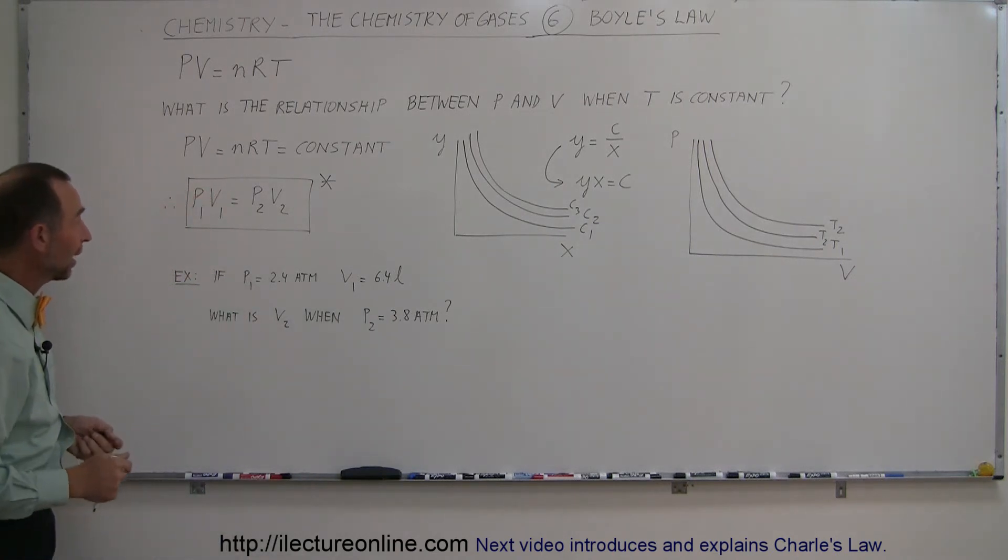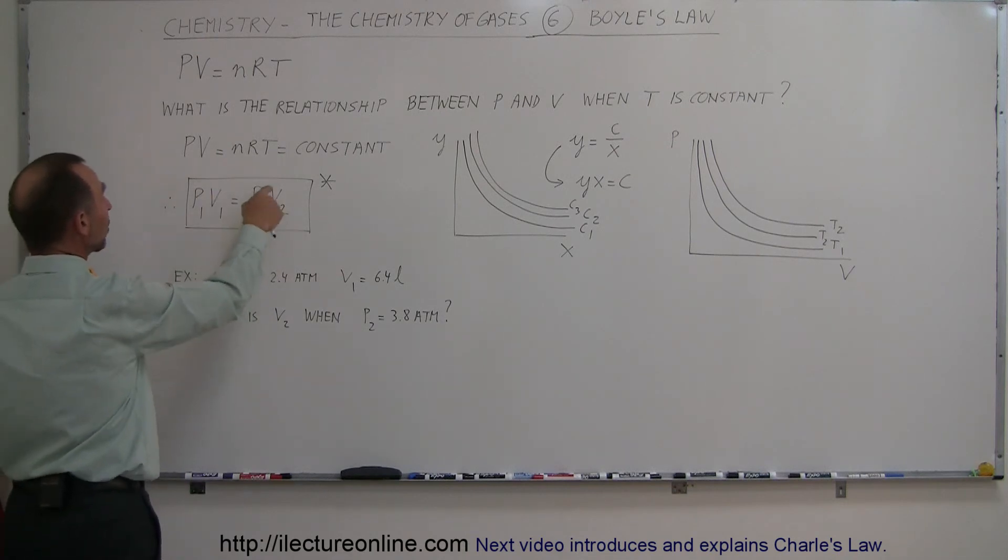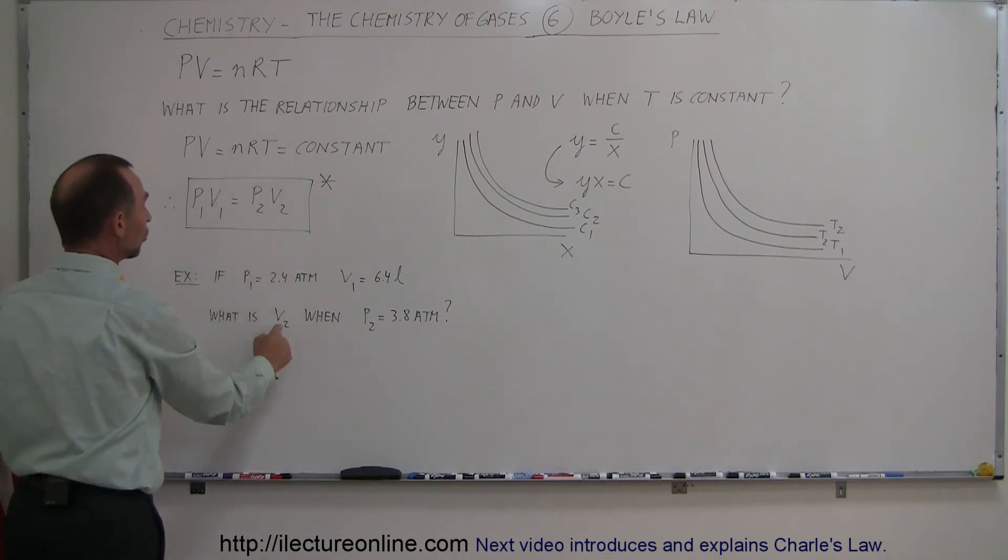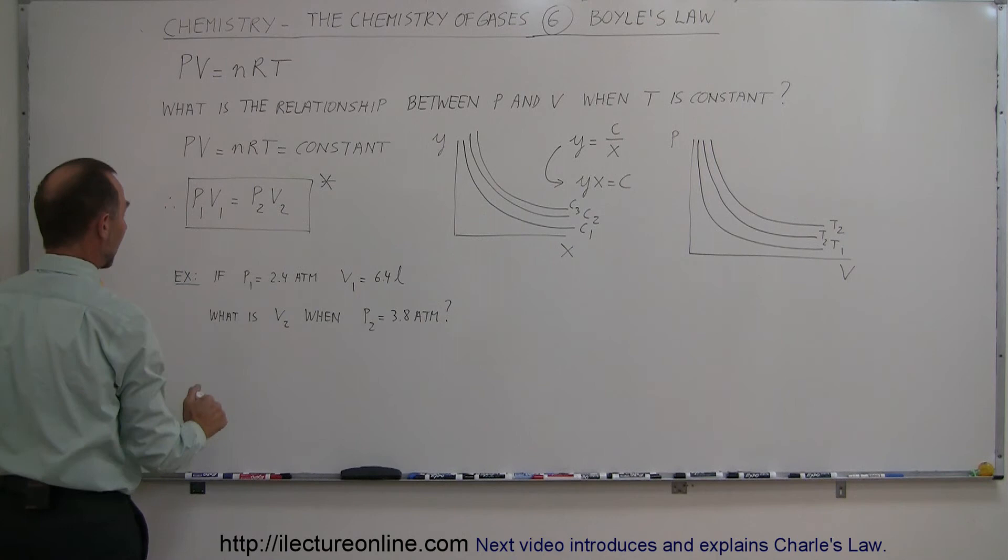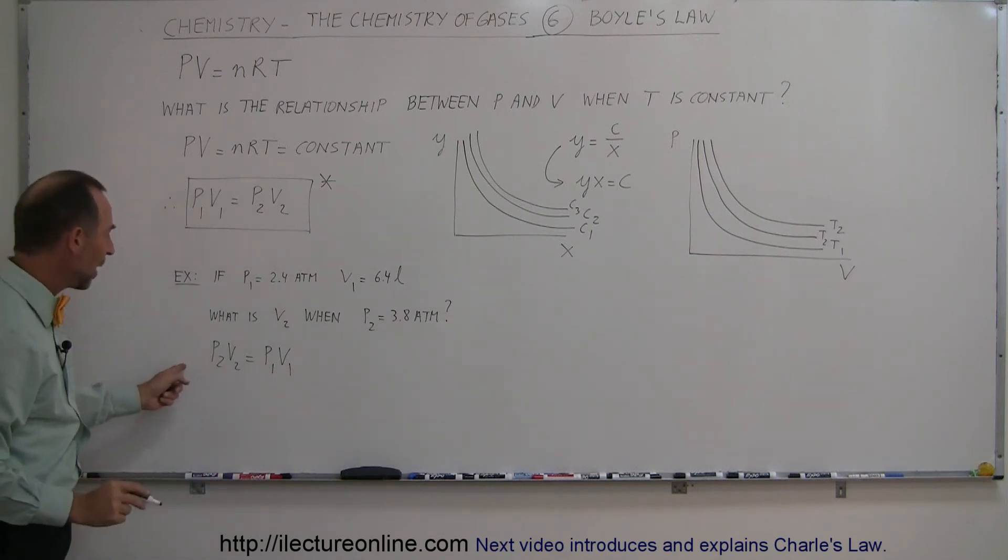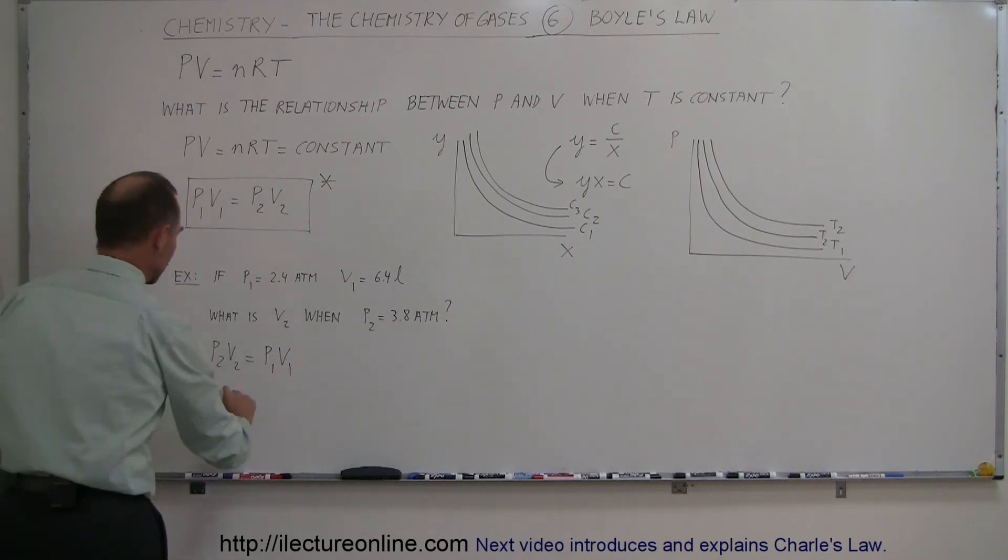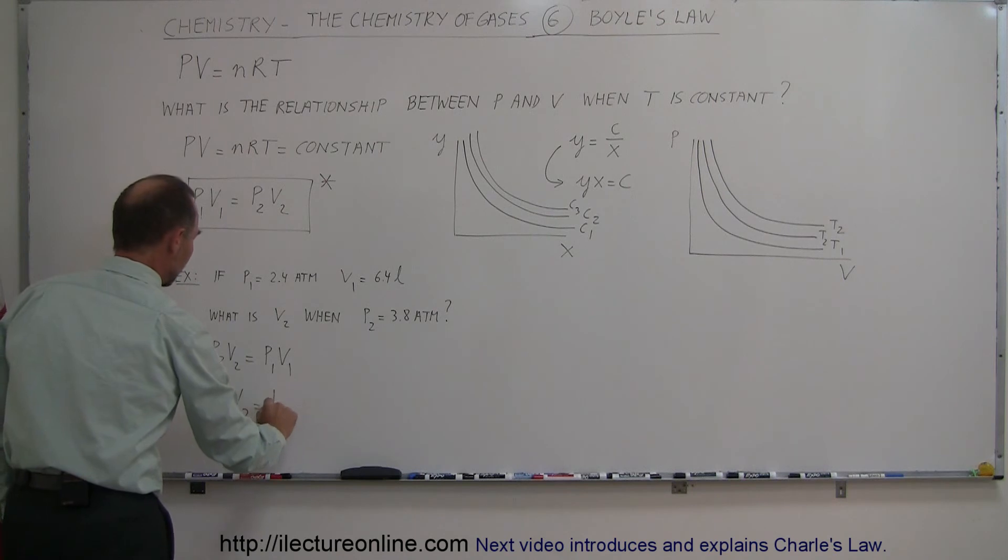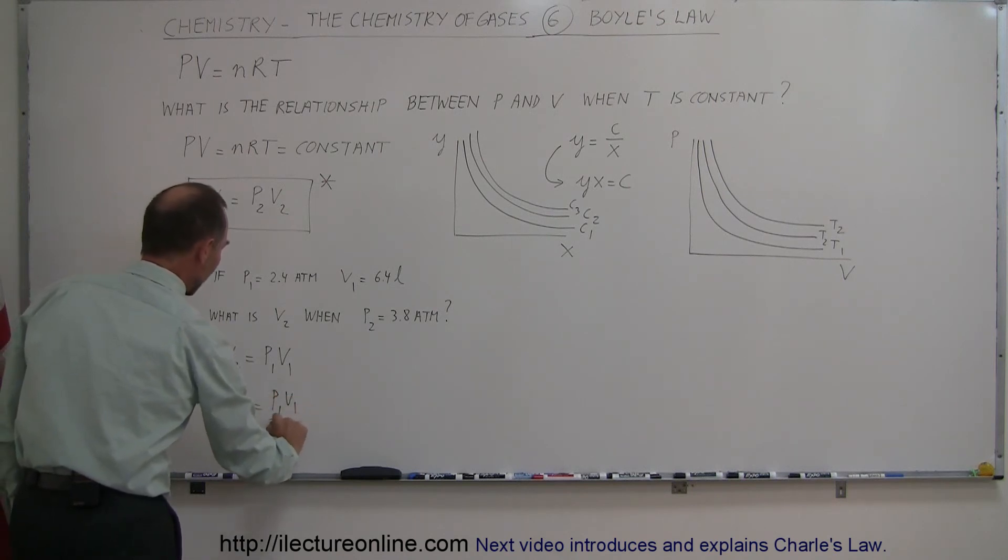And Boyle's Law allows you to figure that out because we can take this equation and solve that equation for V2. So the first thing we do is we turn the equation around. So we have P2V2 is equal to P1V1. And now we divide both sides by P2. So when we do that, we get V2 is equal to P1V1 divided by P2.